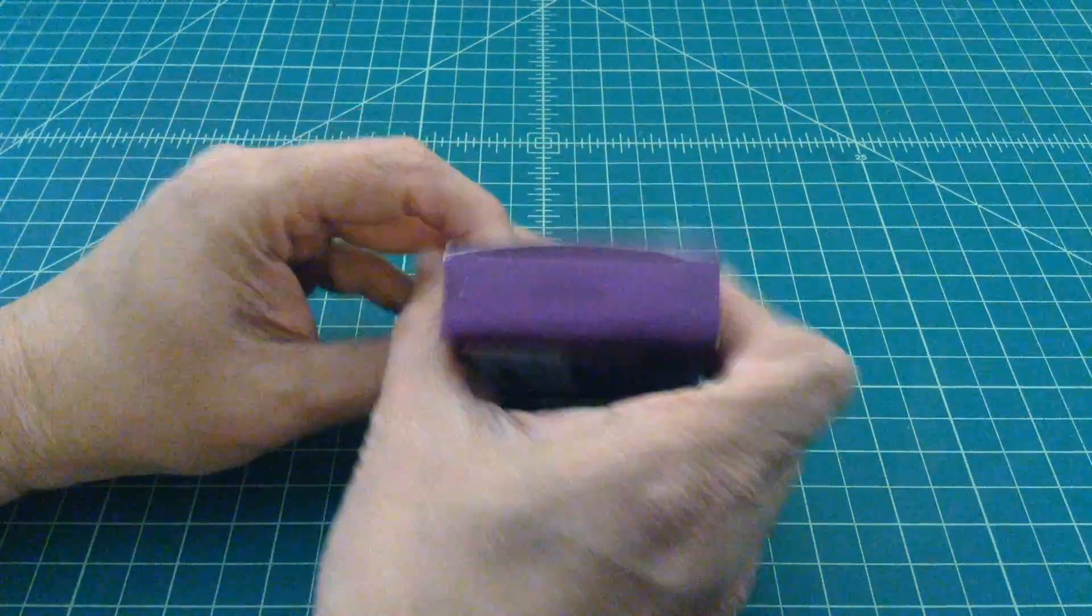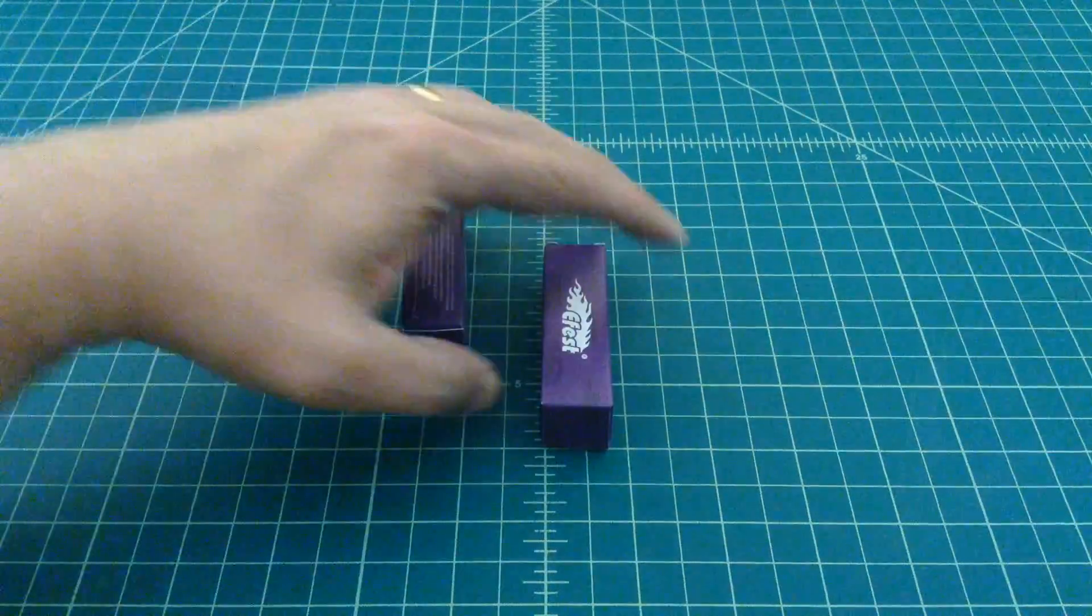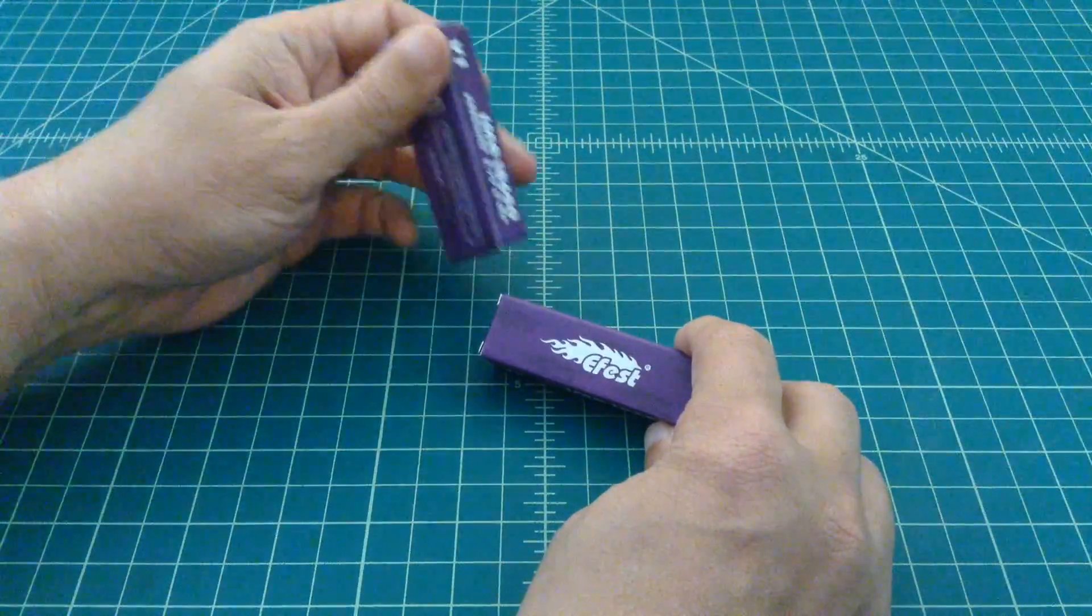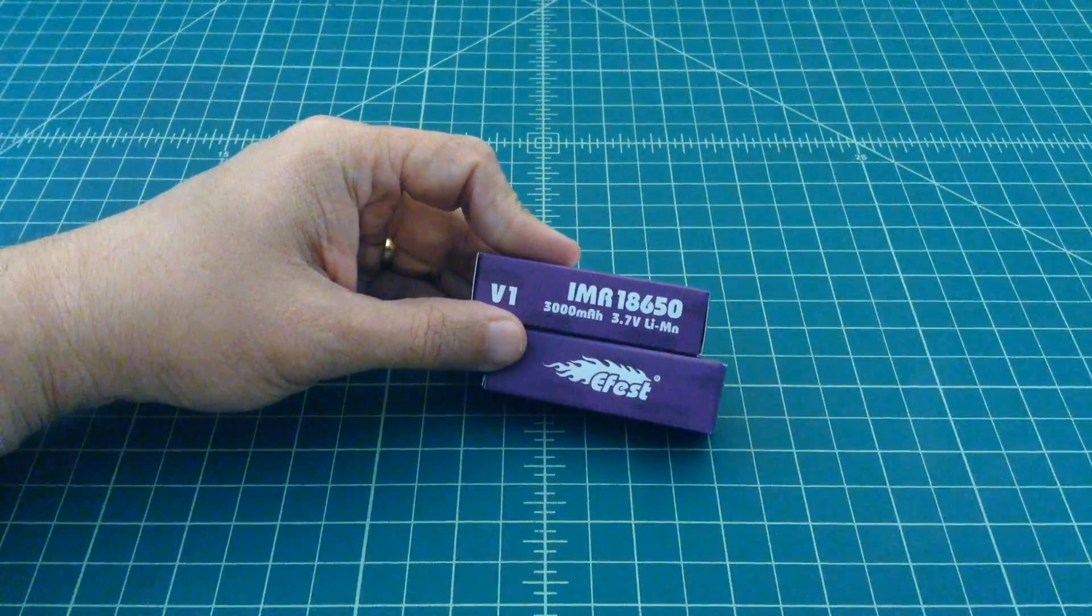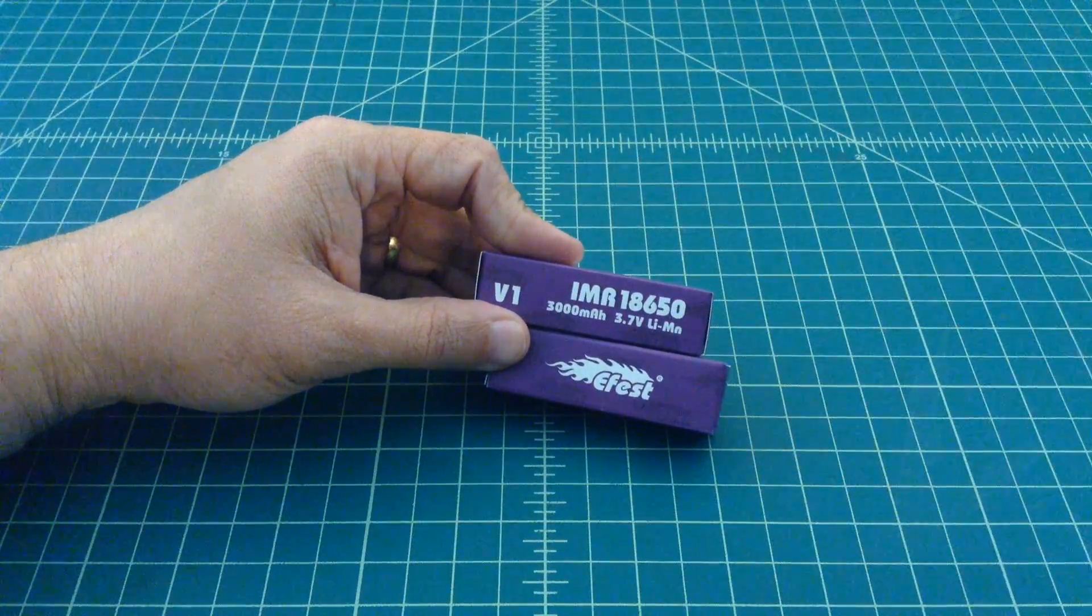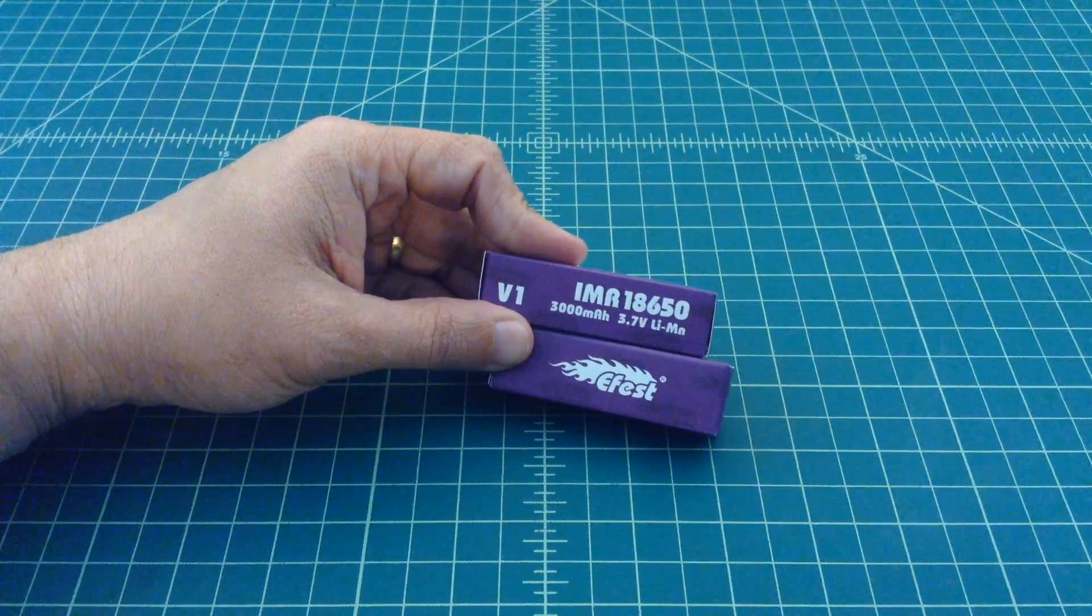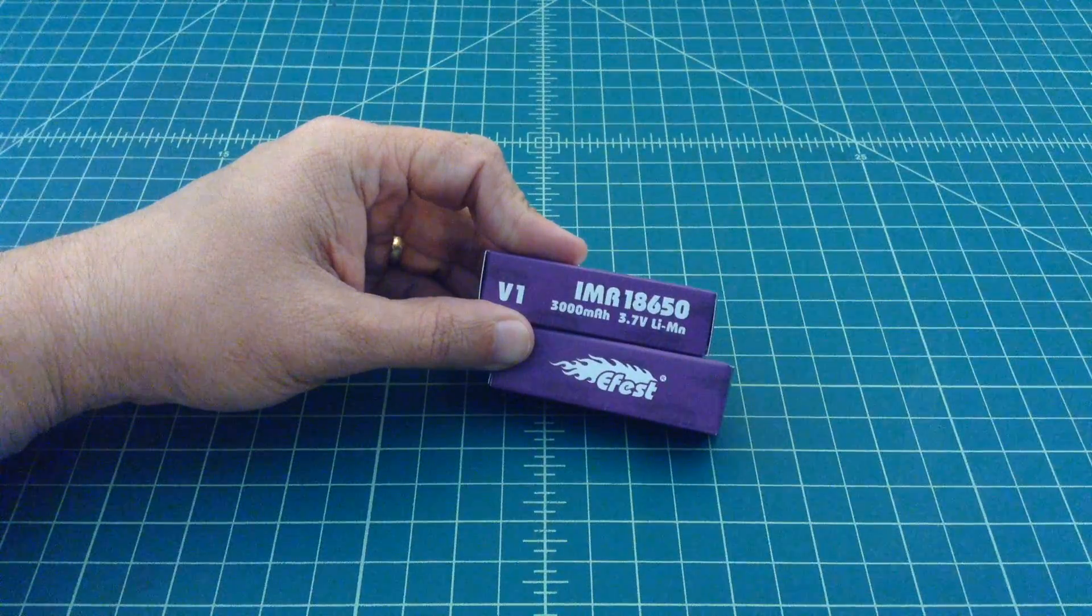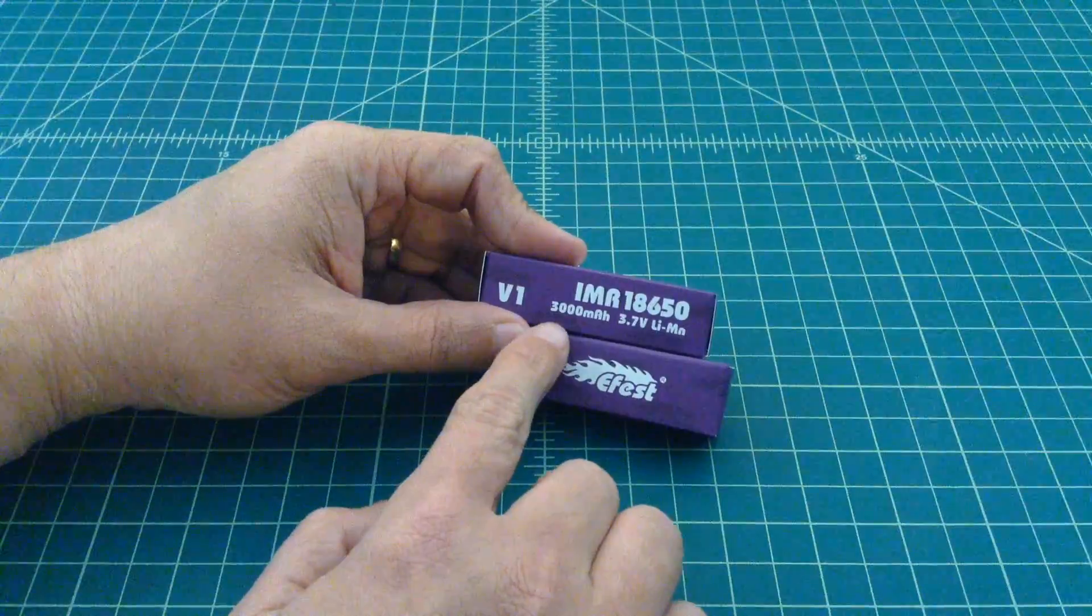All right, so in this box we have two more boxes. Like I mentioned, these are eFest batteries. These are IMR 18650. 18650 is a size designation for these batteries. It means they're 18 millimeters across in diameter and they're 65 millimeters tall. I don't know why they put a zero at the end of that.